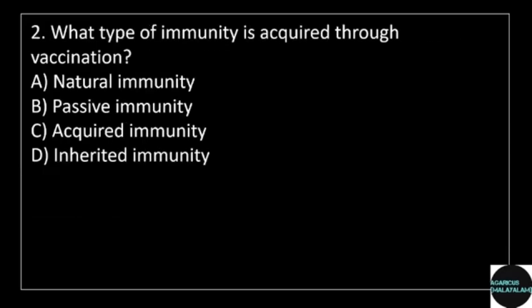2nd question: what type of immunity is acquired through vaccination? Answer options: option A, natural immunity; option B, passive immunity; option C, acquired immunity; option D, inherited immunity.